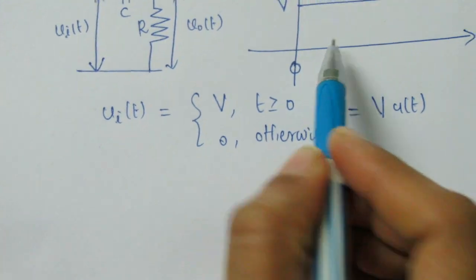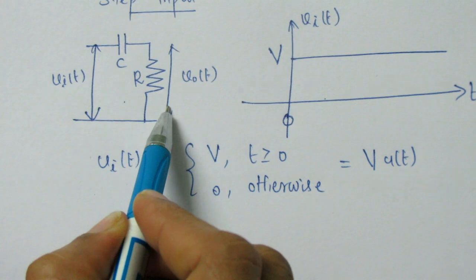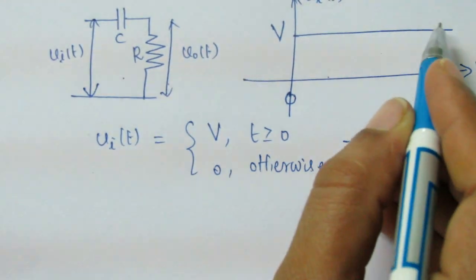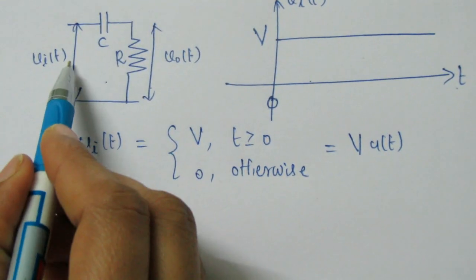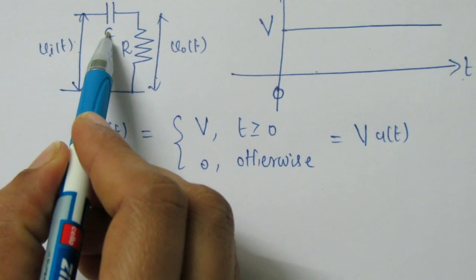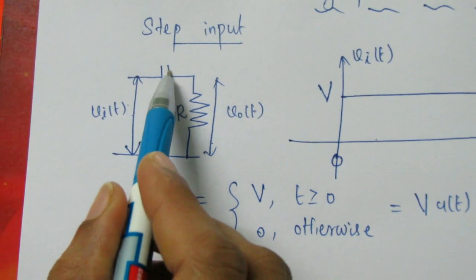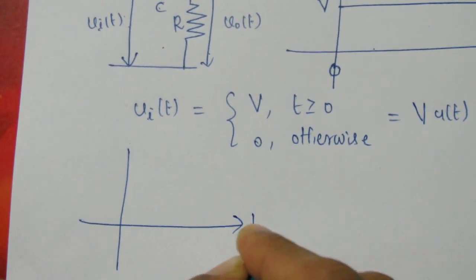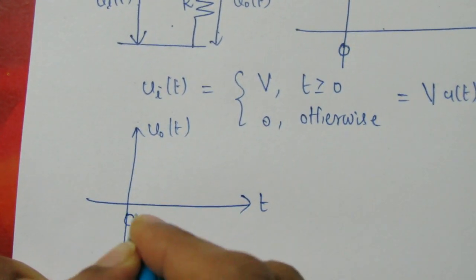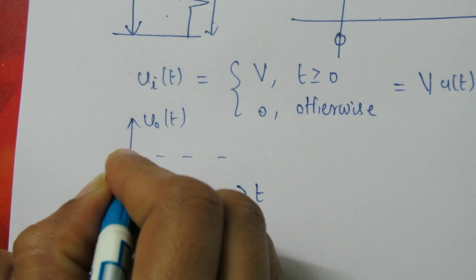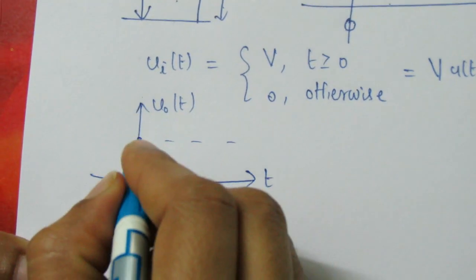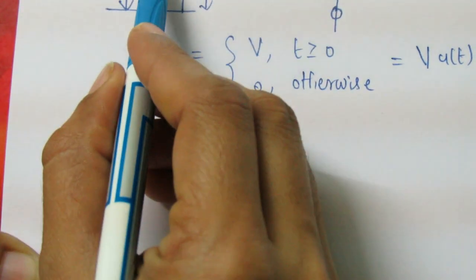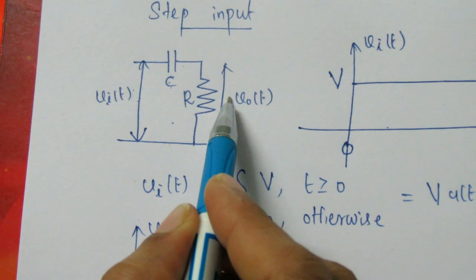When we give this step signal as input to the high pass RC circuit, the step signal at t=0 will have an amplitude of V and this voltage will remain constant till t tends to infinite. When we give an input of V, the behavior of the capacitor will change. When we give any input, the capacitor will allow sudden changes. After that the capacitor will start charging, and the output will exponentially decrease. The capacitor charges exponentially, so the voltage across the resistor will be exponentially decreasing.